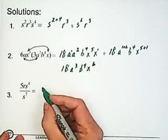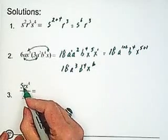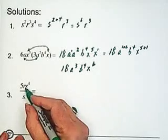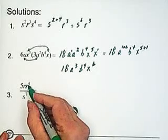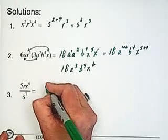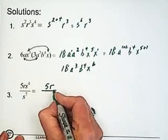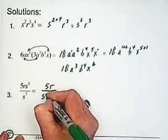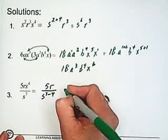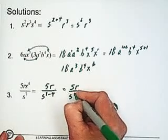Next question. We have 5rs to the 4th divided by s to the 7th. We can see that we have s4 up here and s7 in the denominator. So what we can do is just write our 5r up here. And in the denominator we can take our s with an exponent of 7 and subtract the 4. So we end up with 5r over s cubed.